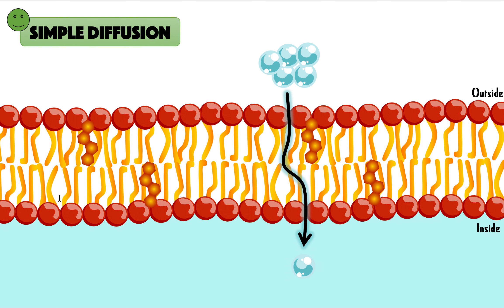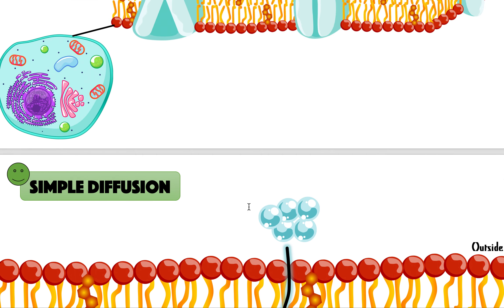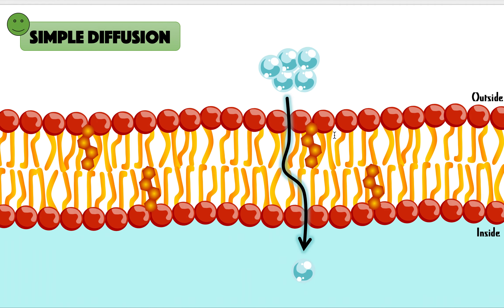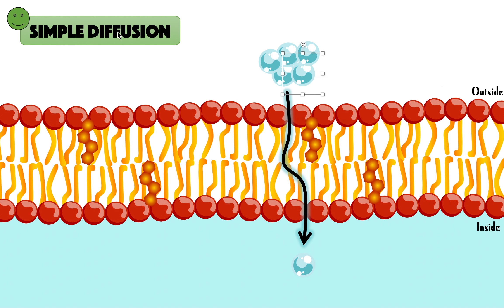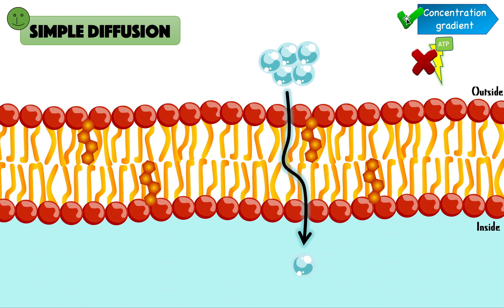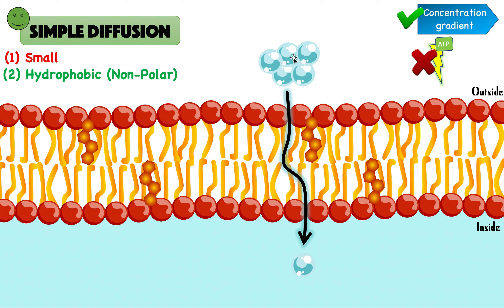So here we have a membrane. Notice that this membrane is just a normal phospholipid bilayer — there's no protein, none of these proteins. For simple diffusion, we don't need those proteins. Simple diffusion is the transport of a molecule down its concentration gradient — from an area of high concentration to an area of low concentration. You can see on the outside of the cell there's a high concentration of this molecule, and on the inside there's a low concentration. So naturally, by simple diffusion, this molecule will travel through the membrane to even out the concentration gradient. For simple diffusion, you need a concentration gradient — that's all. You don't even need ATP. This process happens completely by itself.